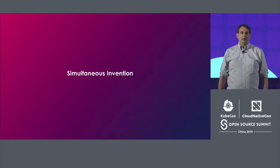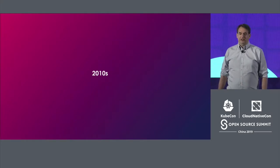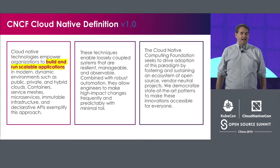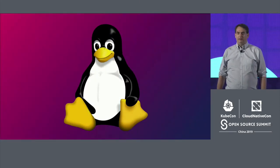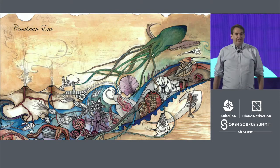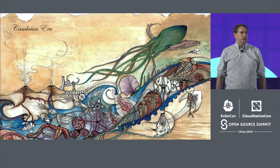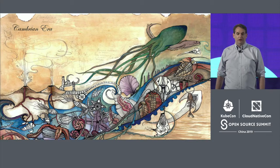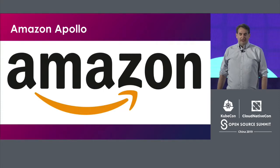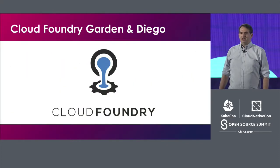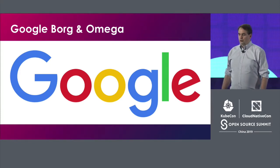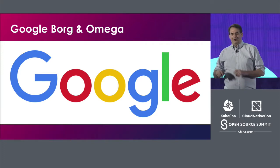Now let's return to this decade and the cloud-native definition. A number of companies faced the challenge of building and running applications at scale. With the prerequisite technologies having become available, including the Internet and Linux, a Cambrian explosion of container orchestrators was created. These systems, each of which followed the cloud-native definition, enabled companies to reach web scale with fewer servers and fewer staff. They include Alibaba Sigma, Amazon Apollo, Apache Mesos, Baidu Matrix, Cloud Foundry Garden and Diego, CoreOS Fleet, Docker Swarm, Facebook Tupperware, and finally Google Borg and Omega. No, just kidding — we're only halfway through.